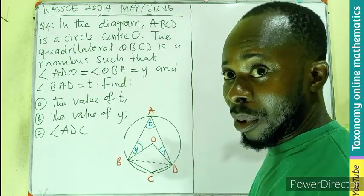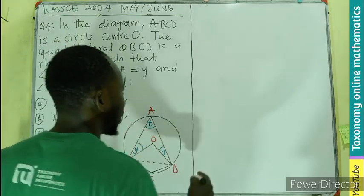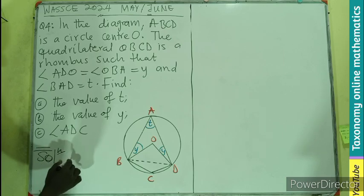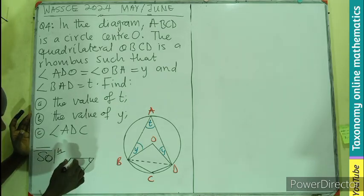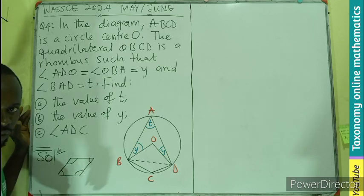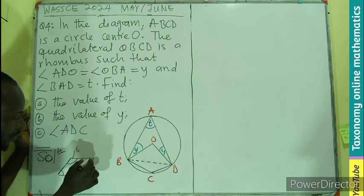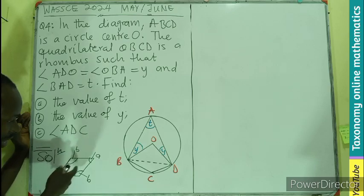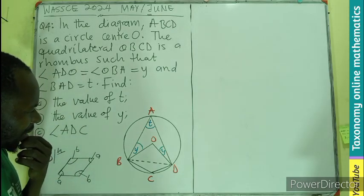Let's bring out the properties given to us. The first one is the rhombus. If you take a rhombus, it looks something like this — where the opposite angles are acute and the other opposite angles are obtuse. So if this angle is greater than 90°, this will be B, and the acute angles will be A. That's the first property we are going to use.